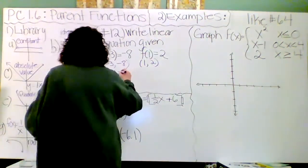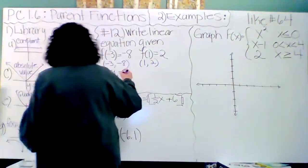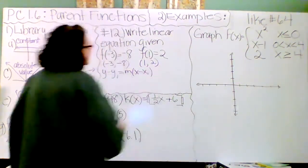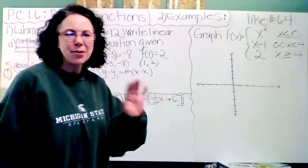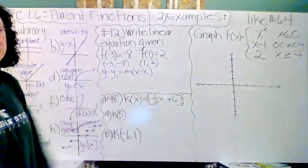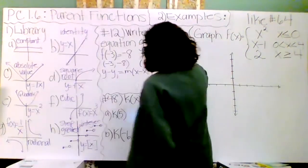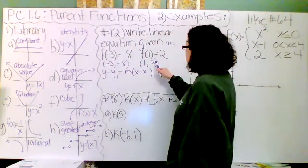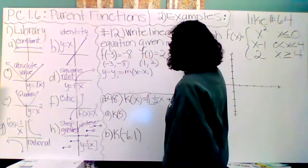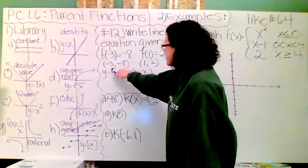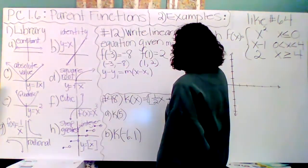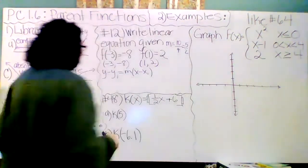Y minus Y1 equals M times X minus X1. You could use the slope intercept form, put in the slope, find your own Y intercept. I always use the point slope form. Let's get the slope. The slope is Y2 minus Y1, that's 2 minus negative 8 is 2 plus 8, and 1 minus negative 3 is 1 plus 3 which is 4. This reduces to 5 halves.